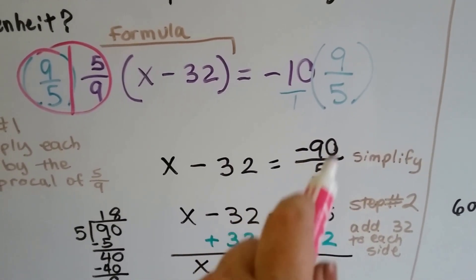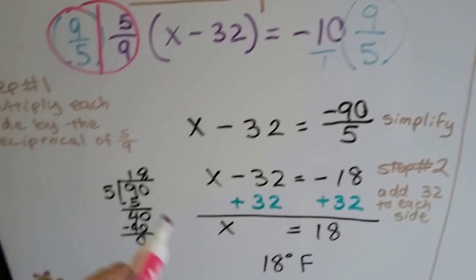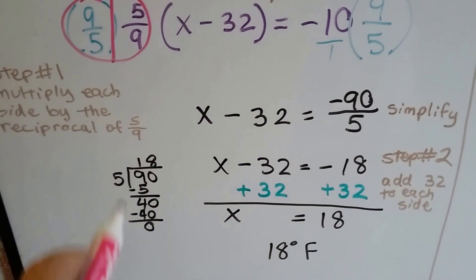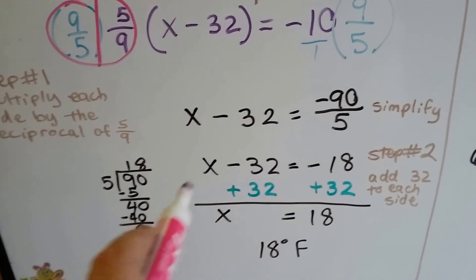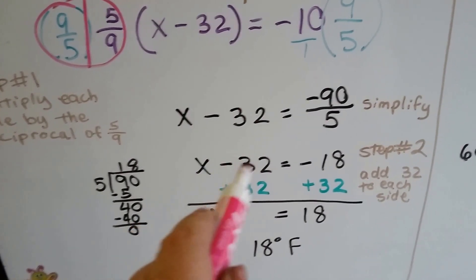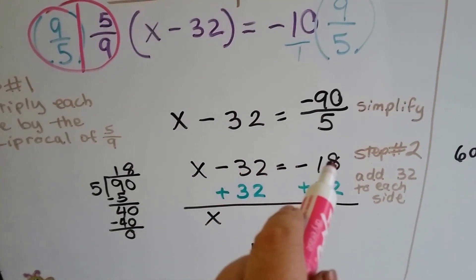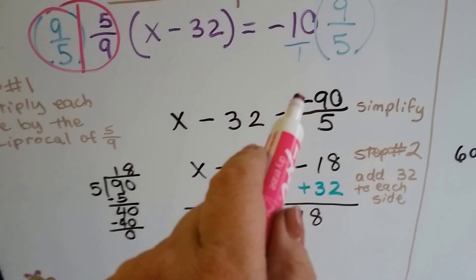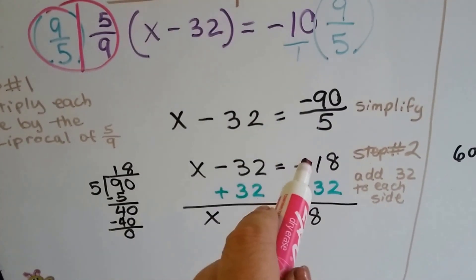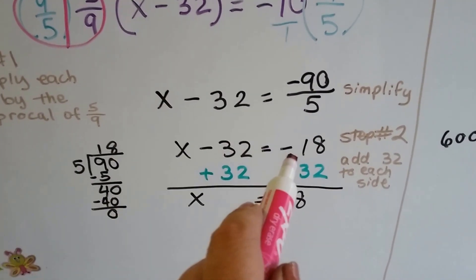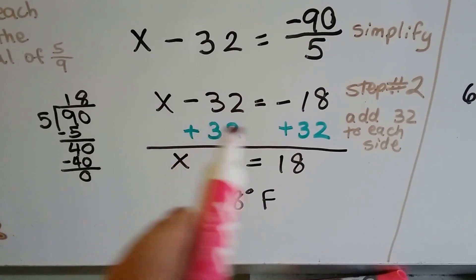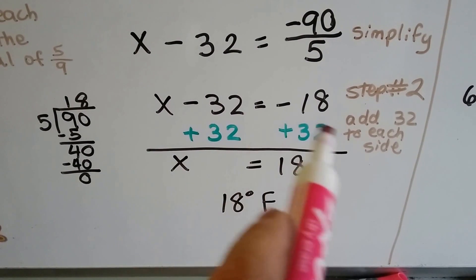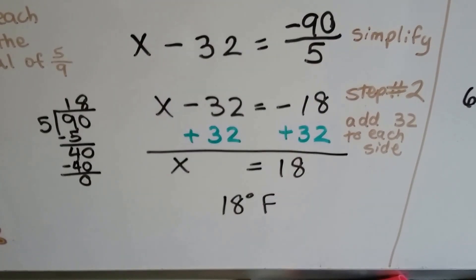We can simplify this. 5 goes into 90 eighteen times. So now it's x minus 32 equals negative 18. Remember, it had a negative sign there, so it's negative 18. Step two is we're going to add 32 to each side to isolate x and get it by itself.